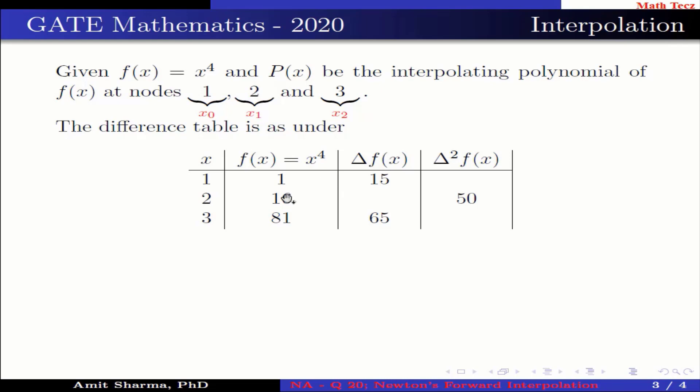Now Δf(x): 16 - 1 = 15, and 81 - 16 = 65. Δ²f(x): 65 - 15 = 50.